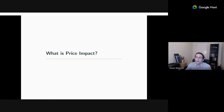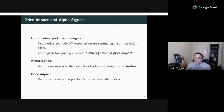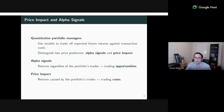First, what is price impact? The best way to define it is by distinguishing it from alpha signals. As context, consider a quant portfolio manager or an execution team at a bank. A quant portfolio manager uses return predictions to decide how much to trade across different assets. There's a trade-off between expected future returns and transaction costs — the alpha versus TC trade-off. You end up with two types of return predictions: alpha signals and price impact. Both might predict, say, a stock going up five percent.